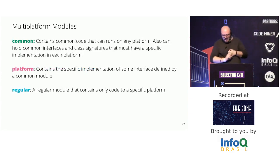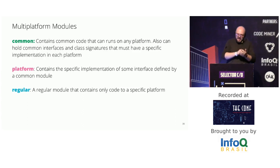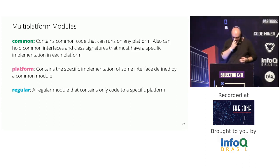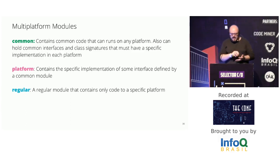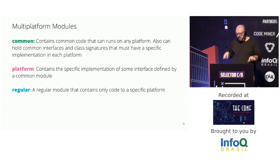The common modules are where you put code that will be used as-is on all platforms. This kind of module can also include class and function definitions that have specific implementation details on each platform. The platform modules are the concrete modules that will be consumed by the library or application on JVM, JavaScript, or native. If the common code specifies something to be implemented in a specific way, those must be implemented in the platform modules, and there are linters and compiler checks to ensure this.